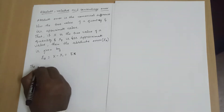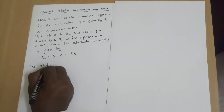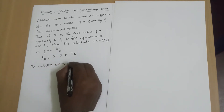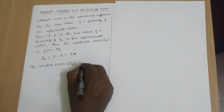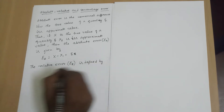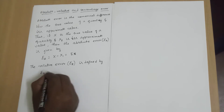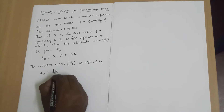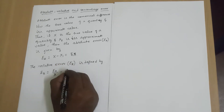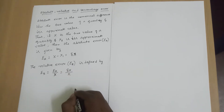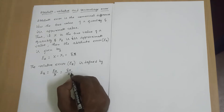Now the relative error is defined as Ea divided by capital X, that is delta X divided by capital X. You have to remember these formulas.